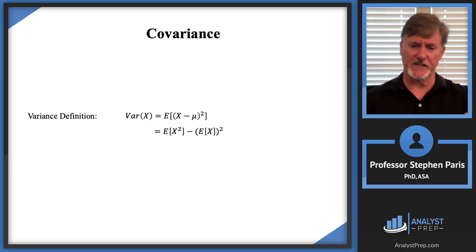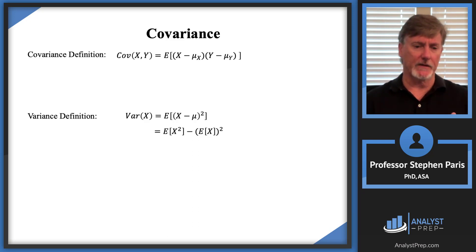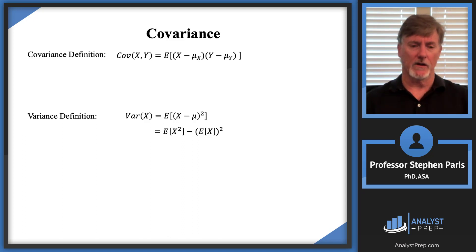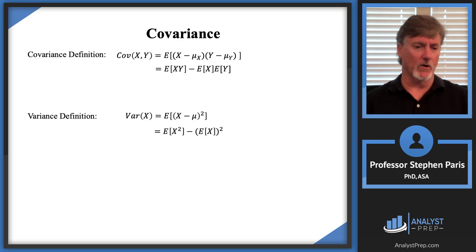The covariance is going to be a generalization of this when we have two random variables. We take the covariance between random variables cap X and cap Y, and it's defined to be the expected value of the product of (cap X minus its mean) with (cap Y minus its mean). Just as with variance, we can reduce this to an easier calculation: the covariance equals the expected value of the product X times Y, minus the product of the expectation of X and the expectation of Y.